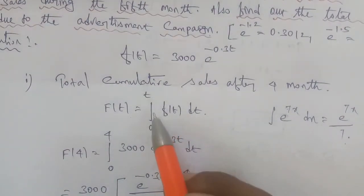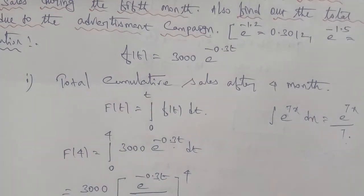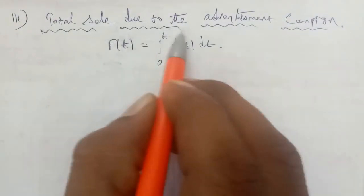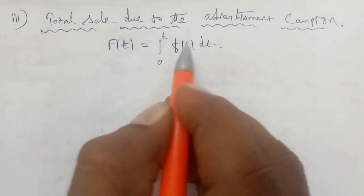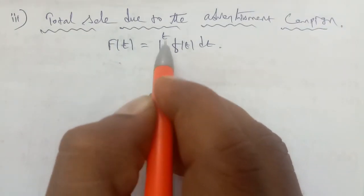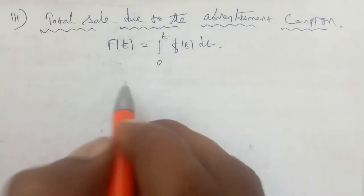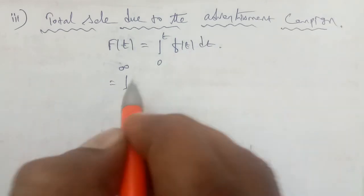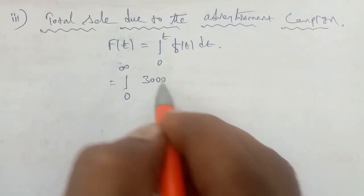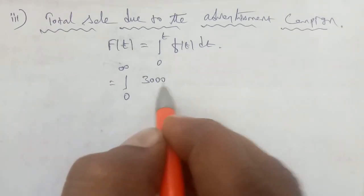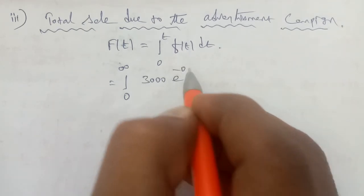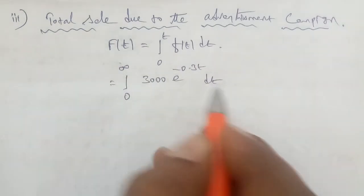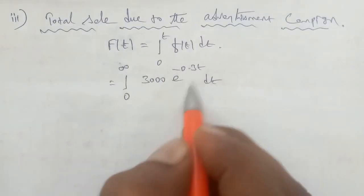Sub-question 3: total sales due to the advertisement campaign. The number of months goes to infinity, so t goes from 0 to infinity. F = integral from 0 to infinity of f(t) dt = integral from 0 to infinity of 3000 e^(-0.3t) dt.